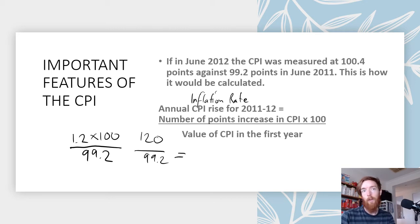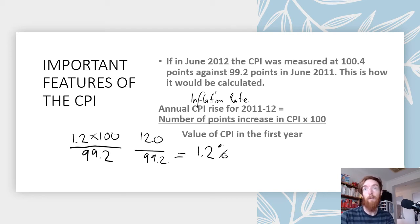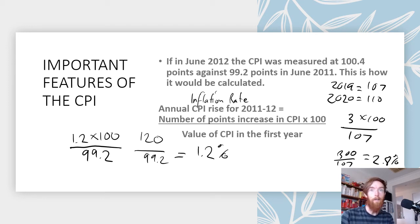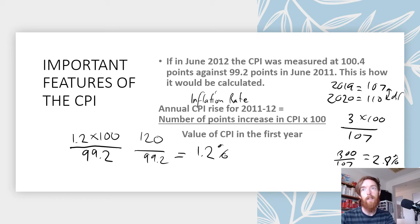That calculation gives 1.2% inflation. Using another example — if 2019 CPI was 107 and 2020 was 110, the difference is 3. So 3 × 100 = 300, divided by 107, equals approximately 2.8% inflation, which is a more realistic figure. The method is always: work out the difference, multiply by 100, then divide by the first year's value.